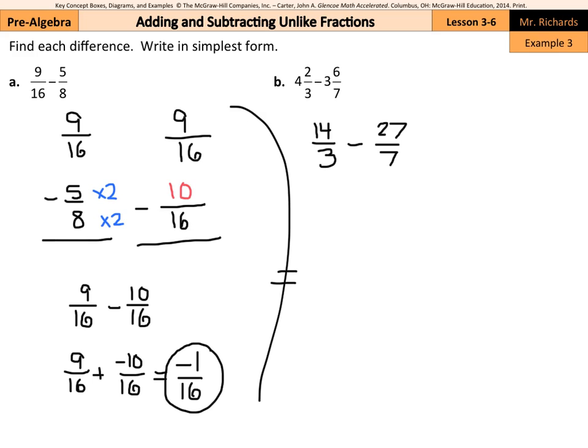Now we do need to get common denominators, and our lowest common denominator here is going to be twenty-one. Three times seven was twenty-one, and fourteen times seven is going to be ninety-eight. Seven times three was twenty-one, twenty-seven times three is eighty-one. And so now that we have common denominators, we can take our ninety-eight minus our eighty-one to get seventeen over twenty-one. And that's our answer, seventeen twenty-firsts.